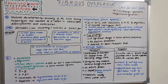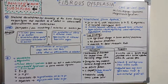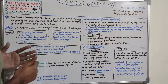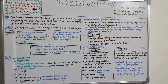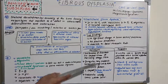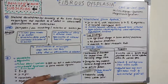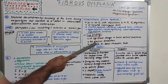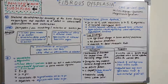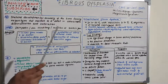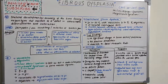Regarding lab findings, there is no significant change in serum calcium or phosphorus, but alkaline phosphatase is increased and basal metabolic rate is moderately increased. Elevated alkaline phosphatase is also seen in Paget's disease.